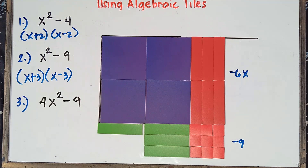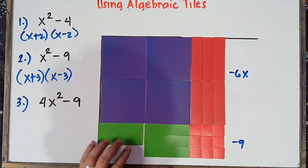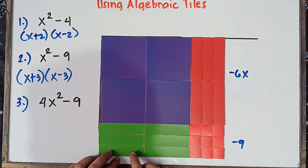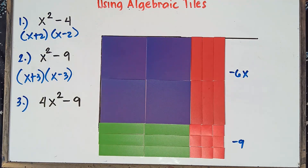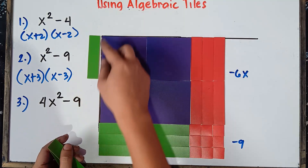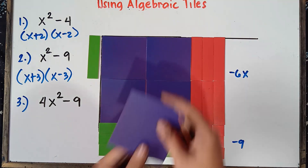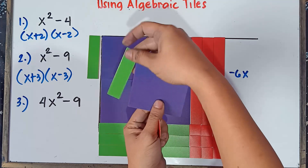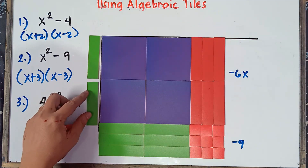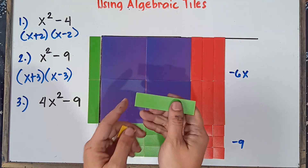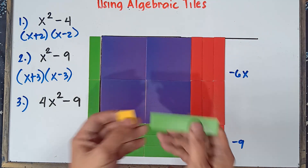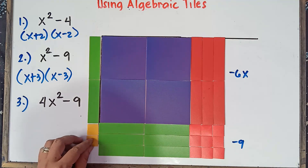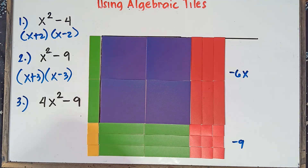We need to keep adding to complete the rectangle: 2x more. Can we form a perfect rectangle? Yes. So what is the measure of the width? We have x and another x — so this is 2x. With regards to the horizontal measure: this would be positive 1, same measure — positive 1, positive 1, and positive 1.